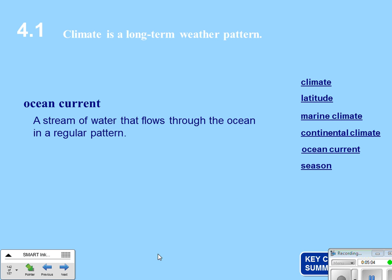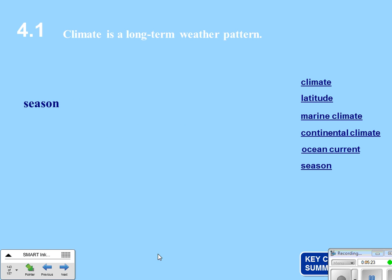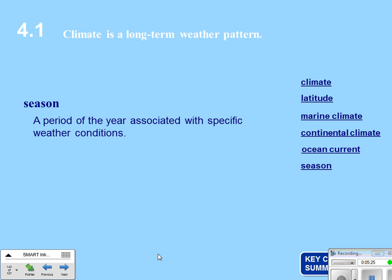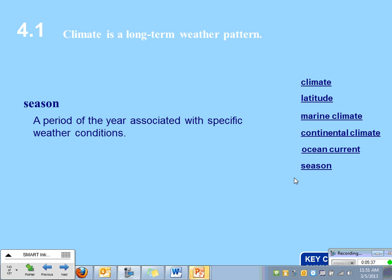An ocean current is a stream of water that flows through the ocean in a regular pattern. Think about the ocean currents from the oceanography unit — the world map with red and blue — and the Gulf Stream as the main one that affects us. A season is a period of the year associated with specific weather conditions: winter means cold temperatures, summer means warm temperatures.